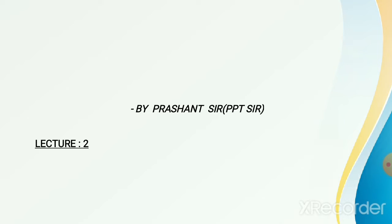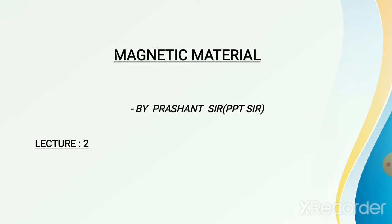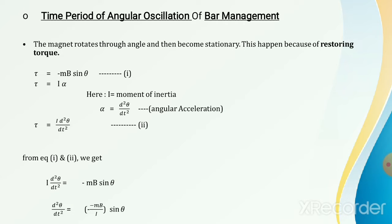Hello, hi friends. I am Prashant sir. This is our second lecture on magnetic materials — again a very interesting and easy topic. In the last lecture we discussed about the bar magnet rotating in the uniform magnetic field. In this lecture we will discuss about the time period of a bar magnet. The time taken by the bar magnet to complete one rotation is called the time period. We will find the time period with the help of this derivation.